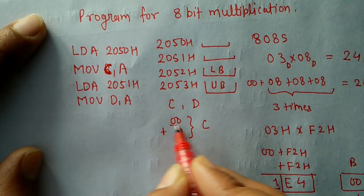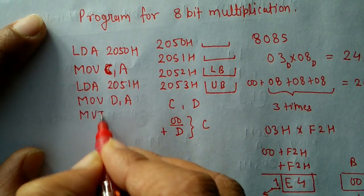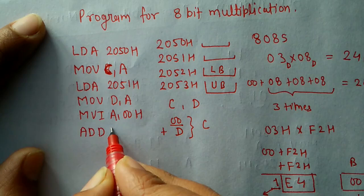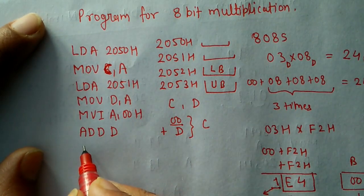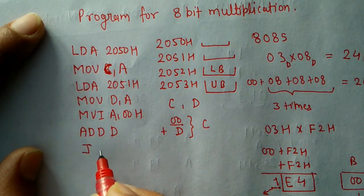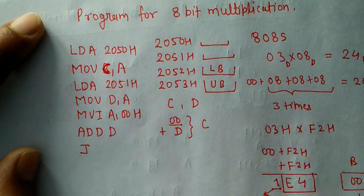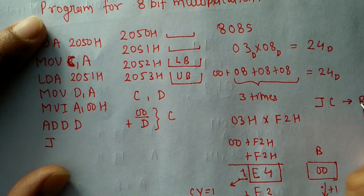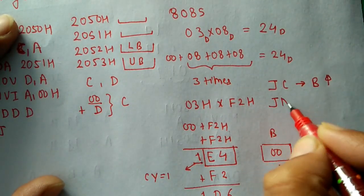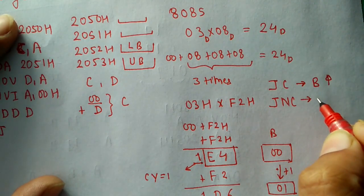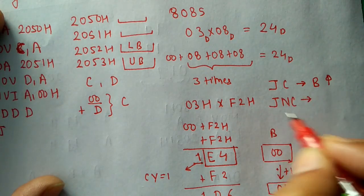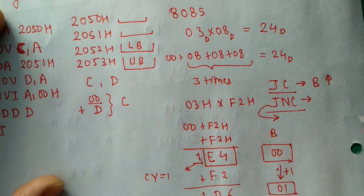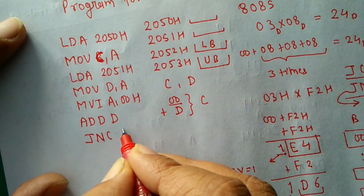We want to add zero plus the content of register D, C times. First we put zero in the accumulator: MVI A, 00h. Then ADD D adds the content of A and D. We then check whether carry is generated. We also initialize register B with MVI B, 00h to track the carry count. If carry is not generated, we use JNC to jump forward to a label — skipping the increment of B.